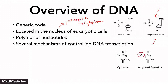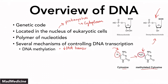There are several mechanisms of controlling DNA transcription, one of which we discussed in our previous video, which is DNA methylation — also shown right here. Essentially, DNA methylation is when you add a methyl group to a base. In this case, we have cytosine and the methyl group is added to this hydrogen right here to create methylated cytosine. The key thing to remember is DNA methylation actually causes a decrease in DNA transcription.